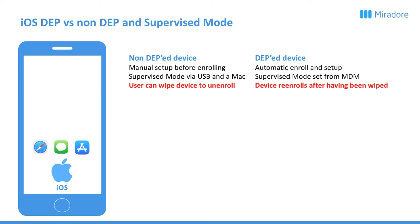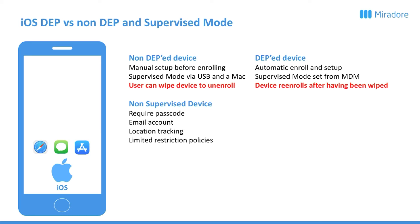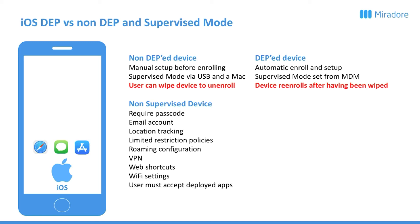Let's have a look at supervised mode. On a non-supervised device, you can actually do quite a lot. You can require a passcode, push an email account, enable location tracking, get access to a limited set of restriction policies, push a roaming configuration, VPN configuration, web shortcuts, and Wi-Fi settings. But one of the problems is that the user will have to accept all deployed apps, so there is no silent app installation. The user can also unenroll the device — they can simply go into the menu and remove your control over the device.